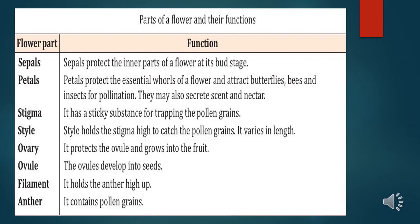In this table, we will study about flower parts and their functions. Sepals protect the inner parts of a flower at its bud stage. Petals protect the essential whorls of a flower and attract butterflies because they are beautiful, scented, and of different colors — that is why they attract insects for pollination. Stigma has a sticky substance for trapping pollen grains. Style holds the stigma high to catch the pollen grains. Ovary protects the ovule and grows into the fruit. Ovules develop into seeds. Filament holds the anther high up. Anther contains pollen grains. This is a very important table — students, you should learn this.